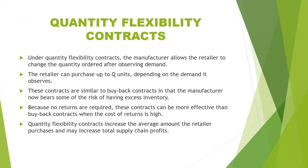The next contract is the quantity flexibility contract. Under the quantity flexibility contract, the manufacturer allows the retailer to change the quantity ordered after observing the demand. The retailer can purchase up to Q units depending on the demand it observes. These contracts are similar to buyback contracts in that the manufacturer bears some of the risk of having excess inventory. Because no returns are required, these contracts can be more effective than the buyback contract when the cost of return is high.